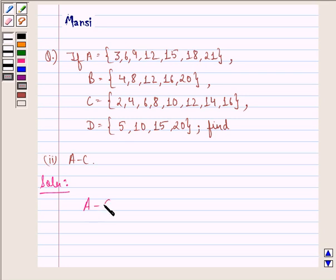We see that A minus C is the set 3, 9, 15, 18 and 21.